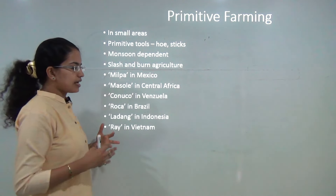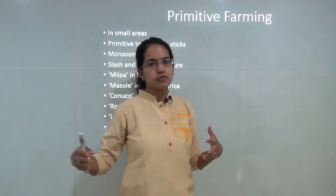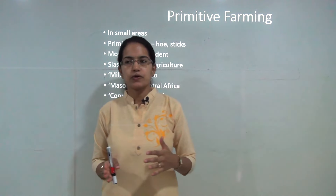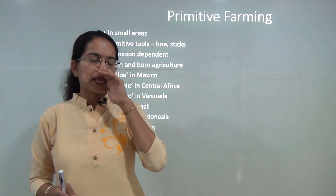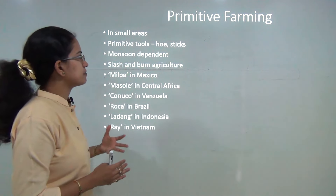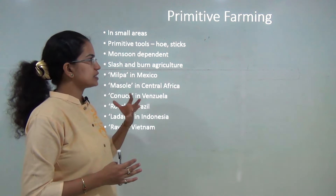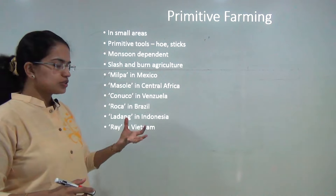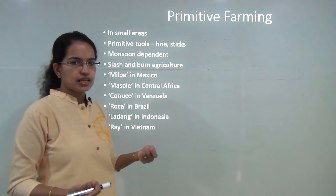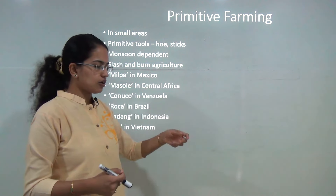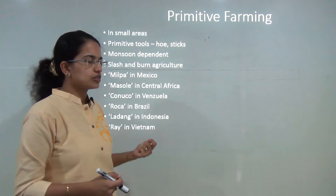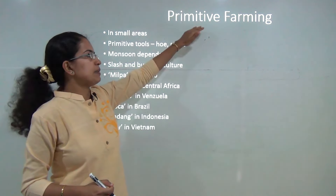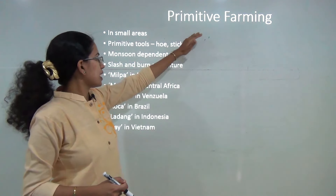We will first understand the various basic types of agricultural activities. The first is primitive farming. This is a kind of farming which occurs in small patches of land. Primitive tools — hoes or sticks — are used to plow the farm. It is highly dependent on monsoon activities.